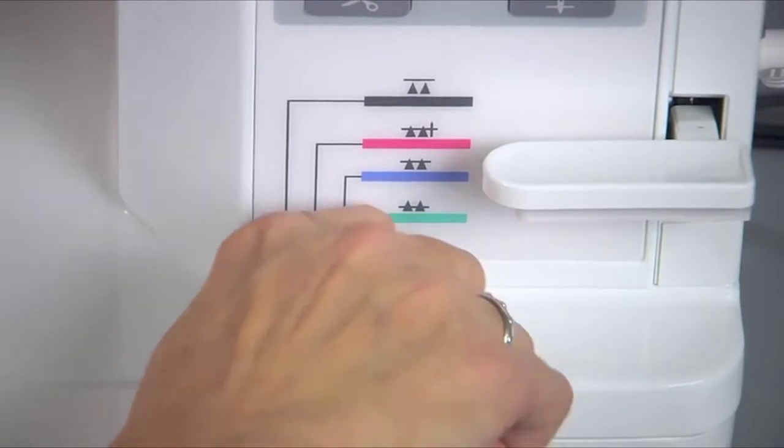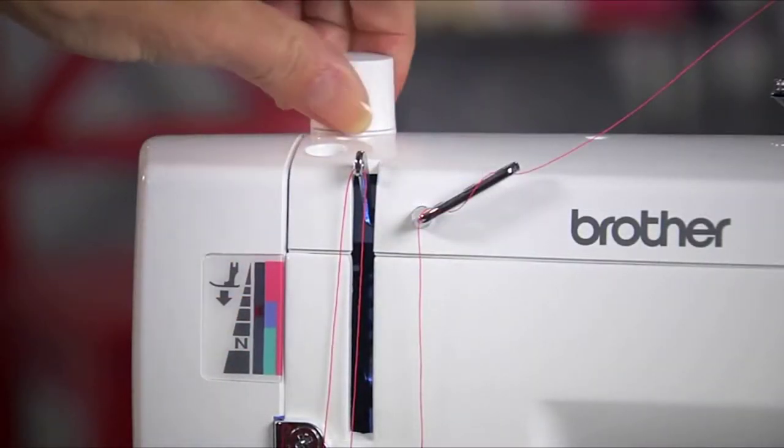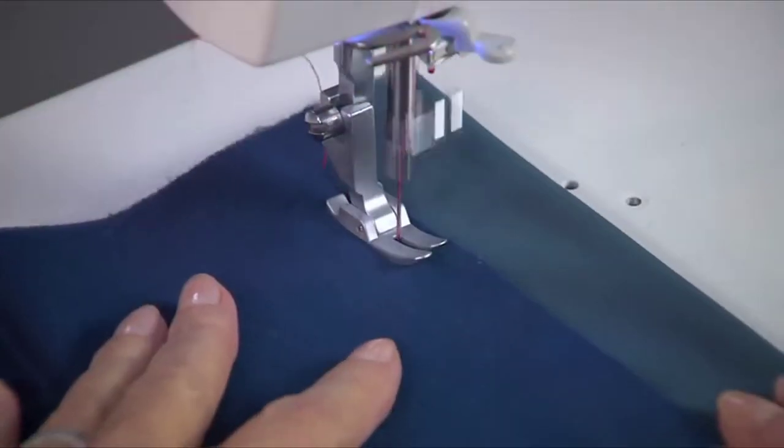You can set the color-coordinated feed dog adjuster and the presser foot pressure dial, allowing you to sew with ease on all types of fabric, even special ones like velvet.